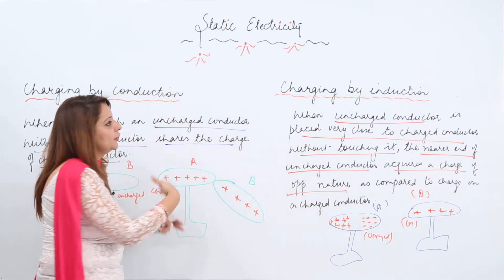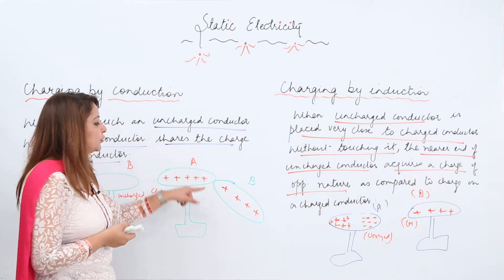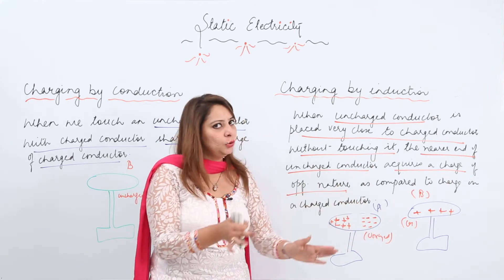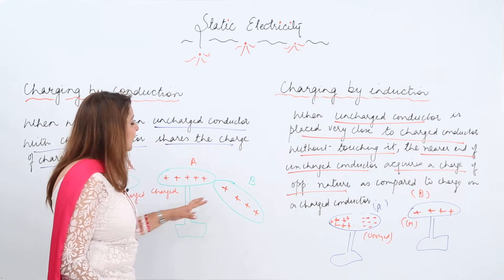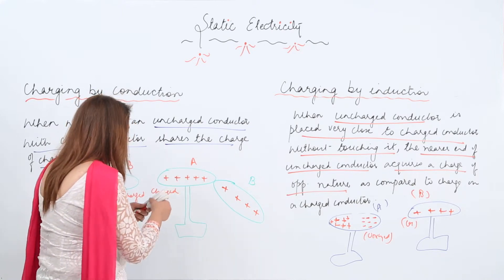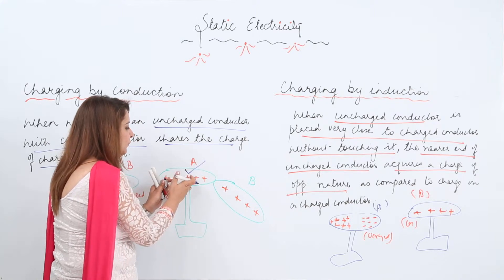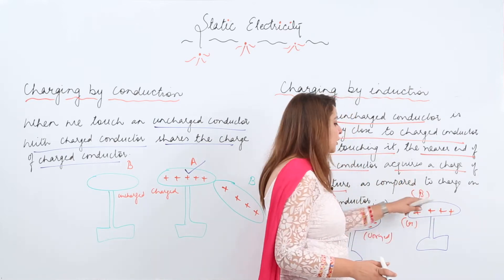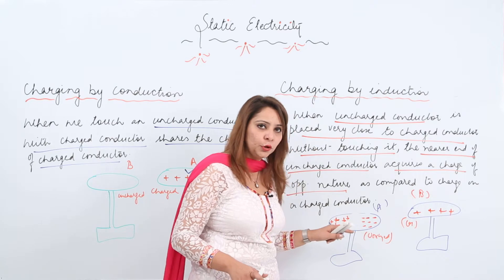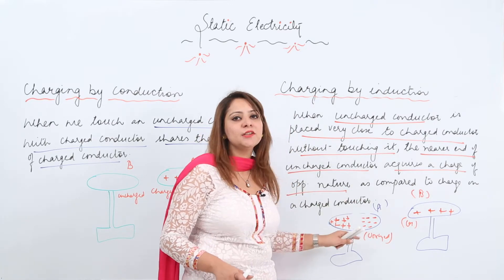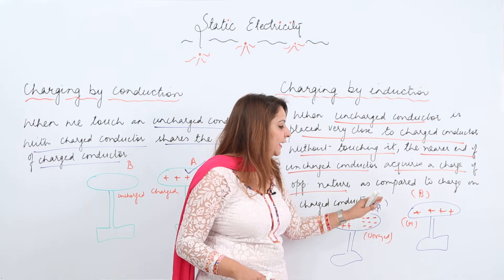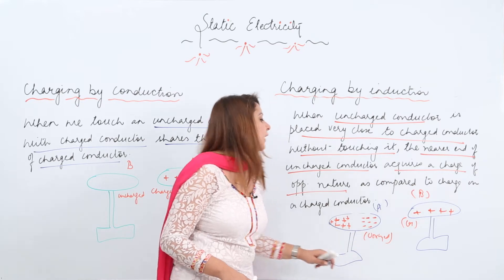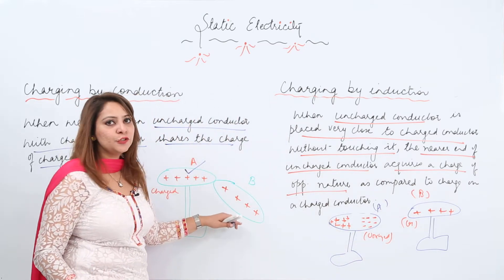Now, what is the difference between charging by conduction and charging by induction? First, in conduction you need to touch the bodies; in induction you don't — you just need to bring them closer. Second, in conduction the strength of the charge on body A gets reduced because some charges flow from A to B. But in induction, the strength of charge on the charged body remains the same, because charge is not flowing — it is just inducing charge. The net charge in each body stays in its own body.